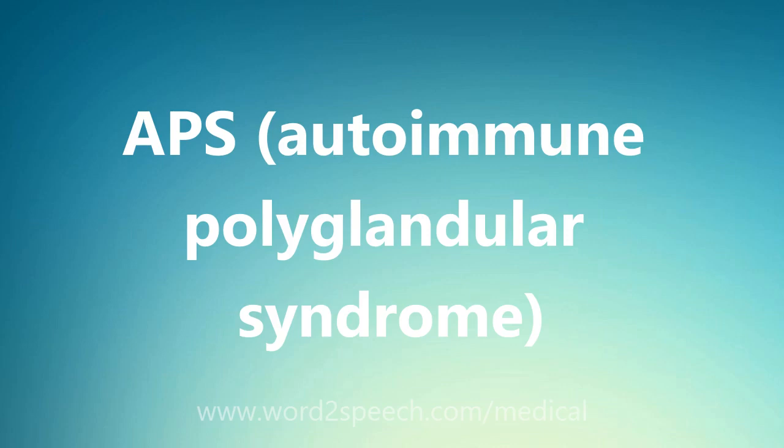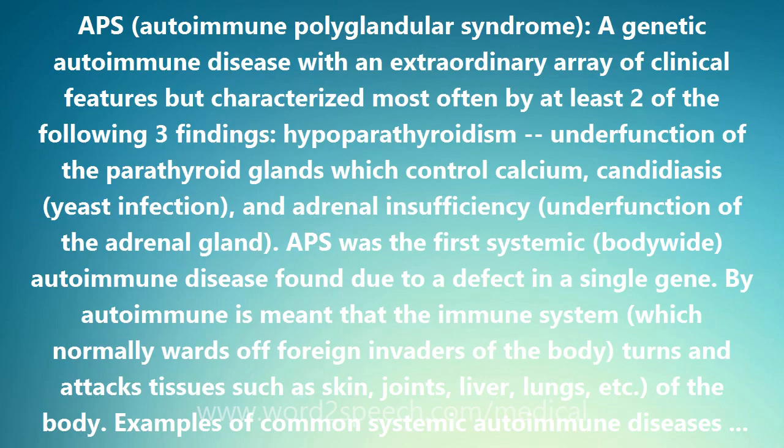APS, Autoimmune Polyglandular Syndrome is a genetic autoimmune disease with an extraordinary array of clinical features, but characterized most often by at least two of the following three findings: hypoparathyroidism, under function of the parathyroid glands which control calcium; candidiasis, a yeast infection; and adrenal insufficiency, under function of the adrenal gland.